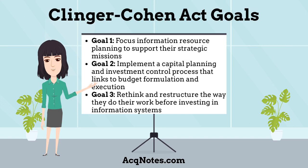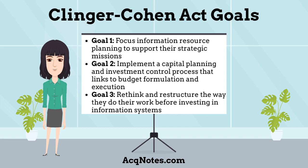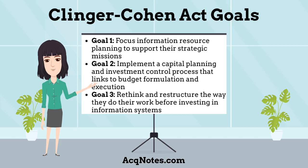What are the goals of the Clinger-Cohen Act? The Clinger-Cohen Act establishes an approach for executive agencies to improve the acquisition and management of their information resources by having three goals. Goal 1: focus information resource planning to support their strategic missions.